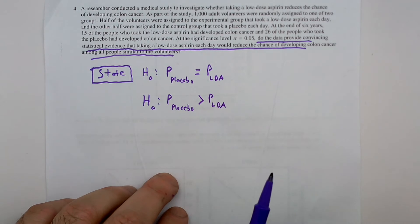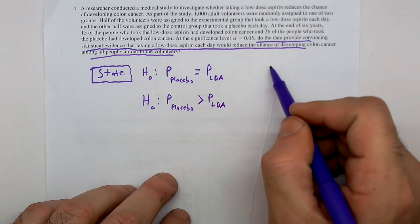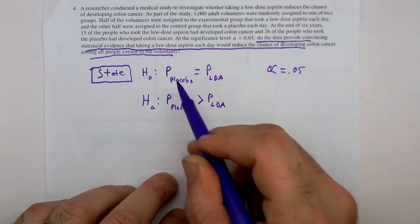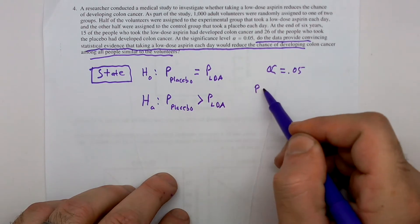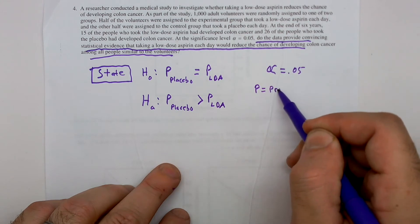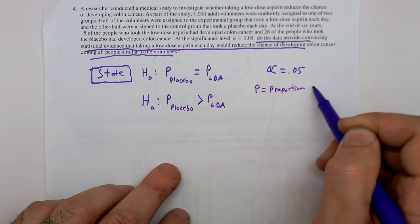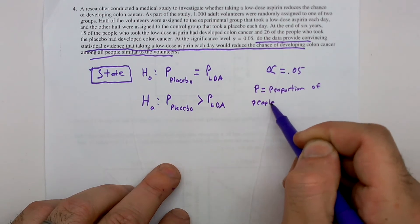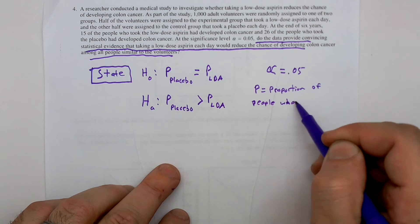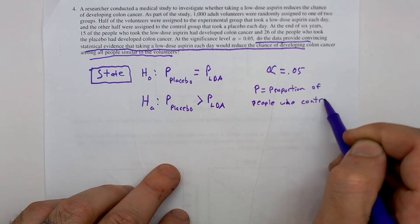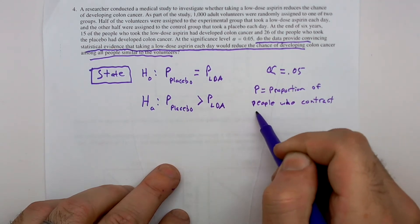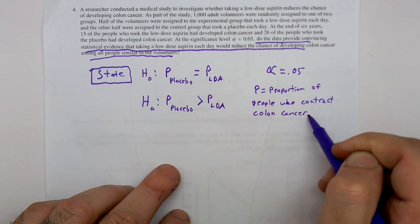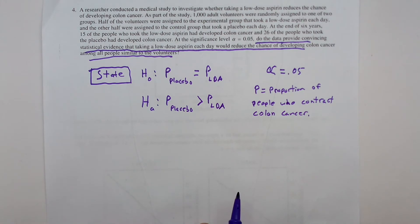All right, our alpha, our stated alpha, is 0.05, and this P is going to be the proportion of people who contract or develop colon cancer. Okay, that is our statement.